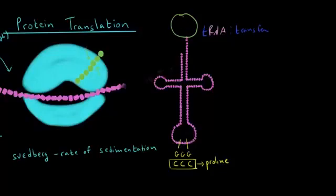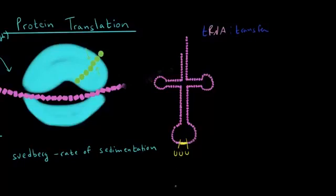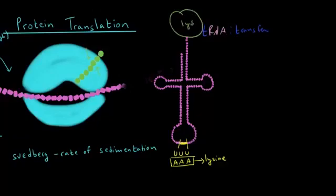Let's do this again to get a clear idea of what's going on. Let's say the anticodon we're looking at reads U, U, U instead of G, G, G. The codon that's complementary to U, U, U is A, A, A. And A, A, A codes for the amino acid lysine. So this particular tRNA molecule is going to carry the amino acid lysine.